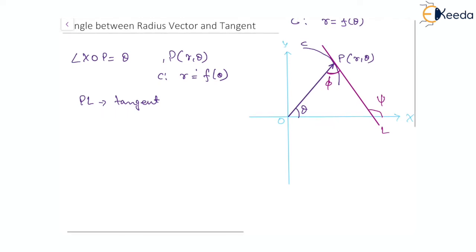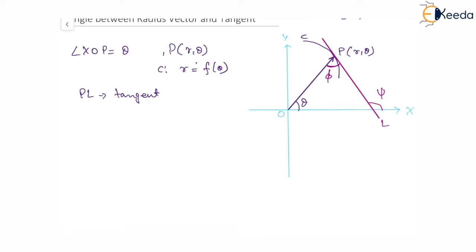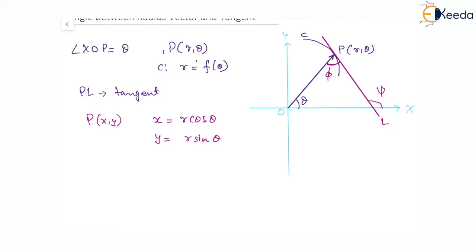We can also consider the same point P in Cartesian coordinates as (x, y), where x equals R cosθ and y equals R sinθ, as we have already seen in the previous video. Now, if we have to find the slope of the tangent PL, we need to compute the derivative.